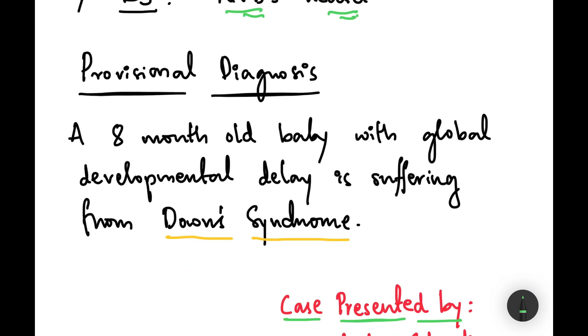Provisional diagnosis: an eight-month-old baby with global developmental delay is suffering from Down syndrome.